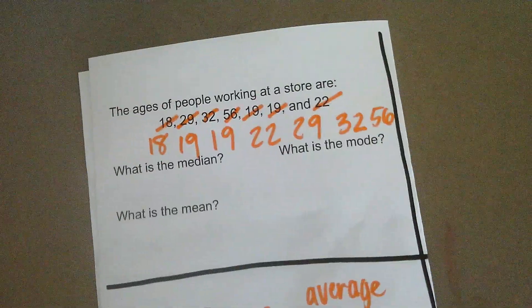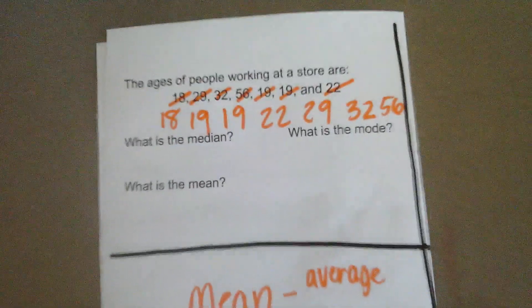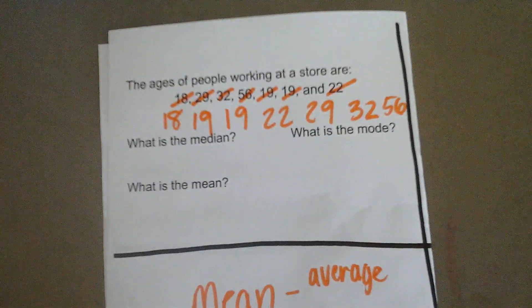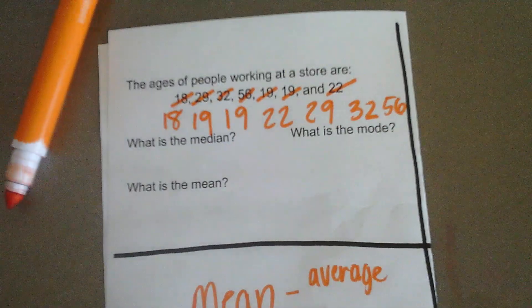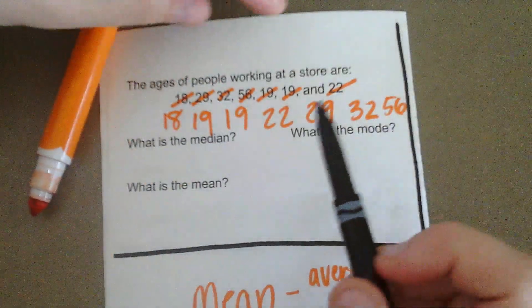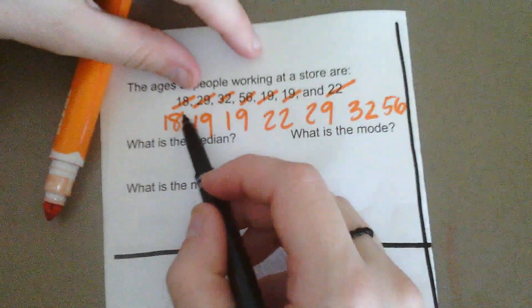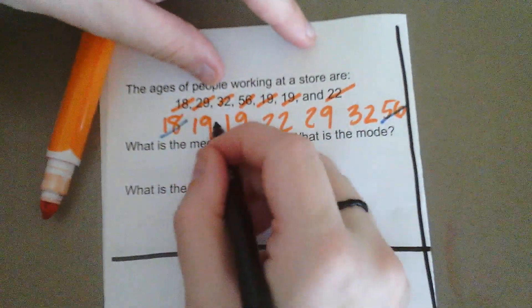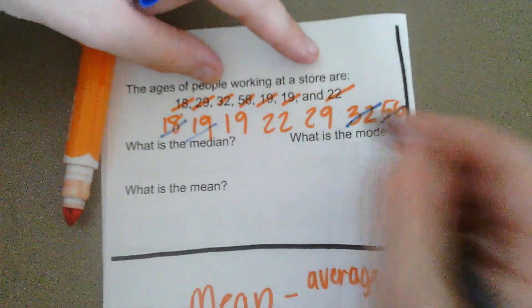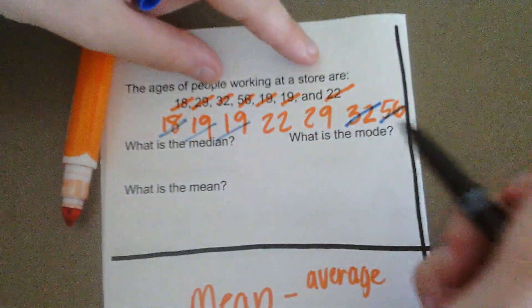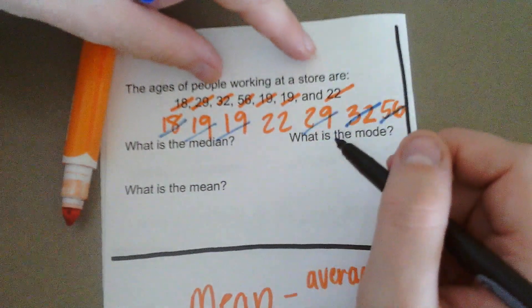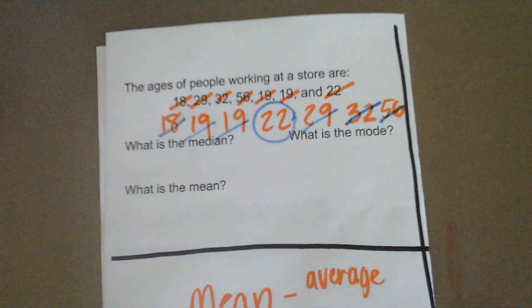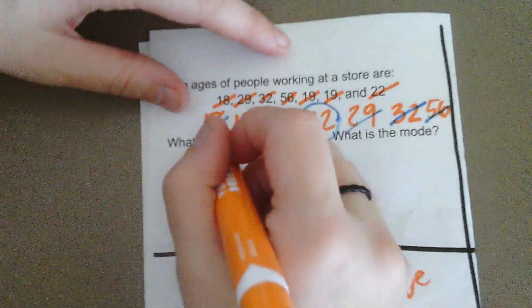Then the next thing we're going to do is find the median. To find the median, we're going to go ahead and cross off some of our values. So, starting at the beginning, to find our direct middle, cross off your first value and your last value. Your first value, second last value. Third value, third last value. The value in the center is our median. It's the value in the direct middle of our list.